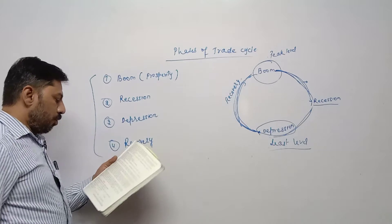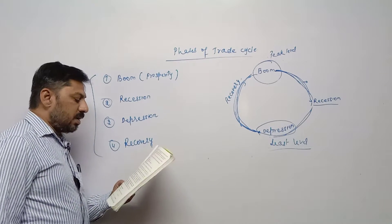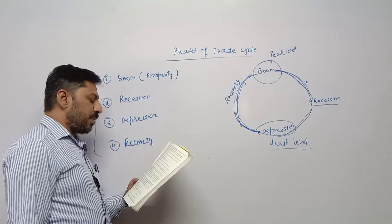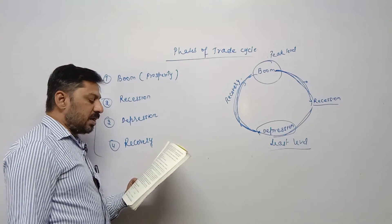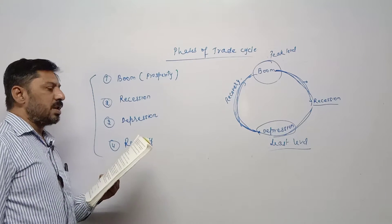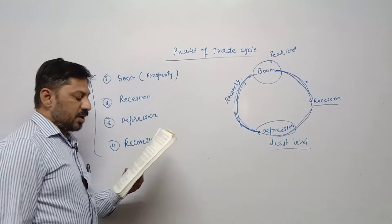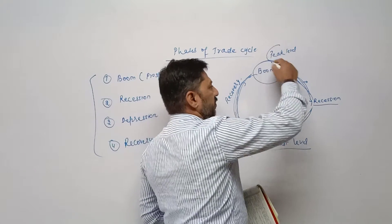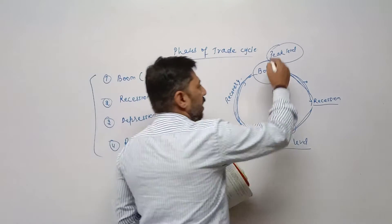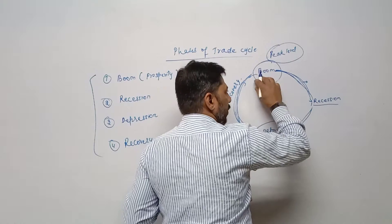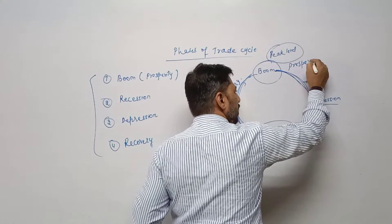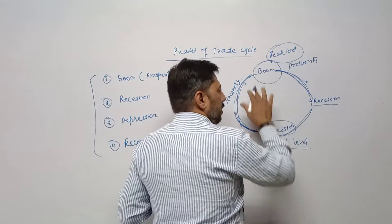According to the textbook: boom period is the period when economic activity reaches the maximum growth level in a given time period. Demand has peaked, and so have income and profit. Demand, production, employment, income, and profit in the economy are all at their peak level — at the highest level. Thus this period is also called peak period. Boom period, peak level, and prosperity period are different names for the same phase.